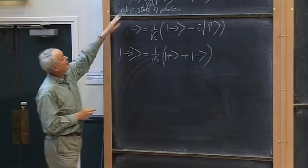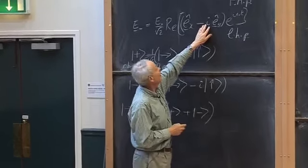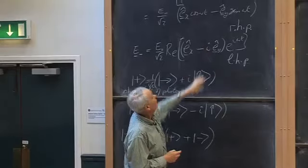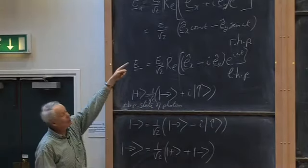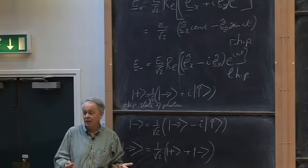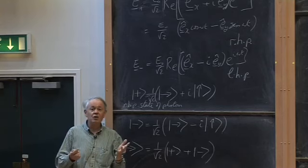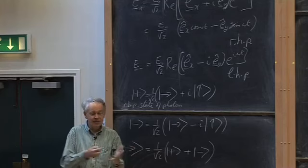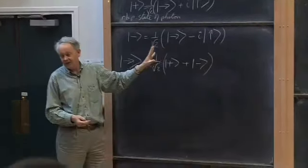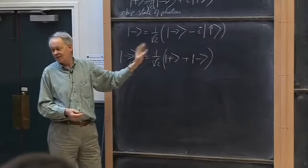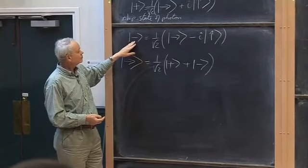Something else to point out: in classical physics I was using i as a handy algebraic shorthand, with a real operator sitting in front — the electric field was totally real and any square root of minus one was merely a device for compressing the algebra. In the quantum mechanical case, the i is real: there is no real operator, no such nonsense. This is inherently a complex object.